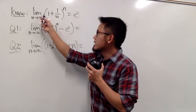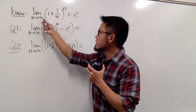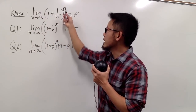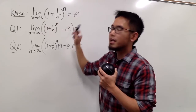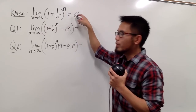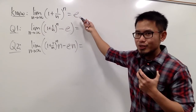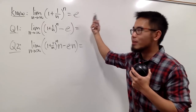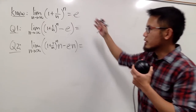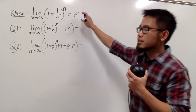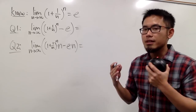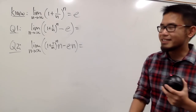As we all know, the limit as n goes to infinity of 1 plus 1 over n raised to the nth power is equal to e. This is just one of the definitions of the special number e. If you want to see a more detailed explanation on this, you can check out my other videos — I'll have the links in the description.